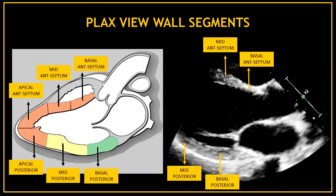We already know that we can visualize the anterior septum and the posterior wall in the parasternal long axis view. But we can also differentiate the different segments of these walls. The basal segments are the segments closer to the valves. Then we can find the middle segments, and sometimes we are able to see the apical segments from this view.